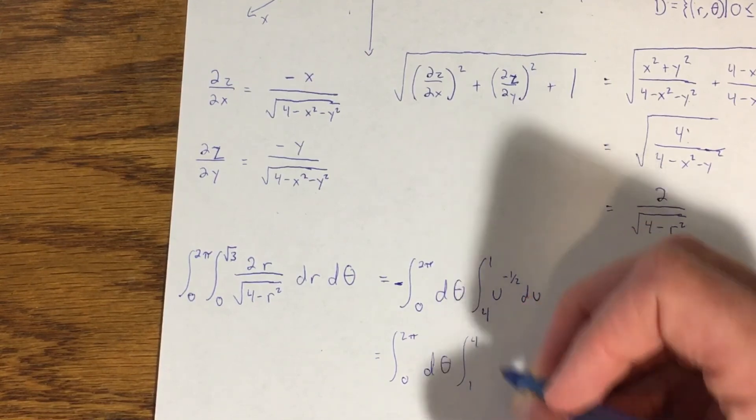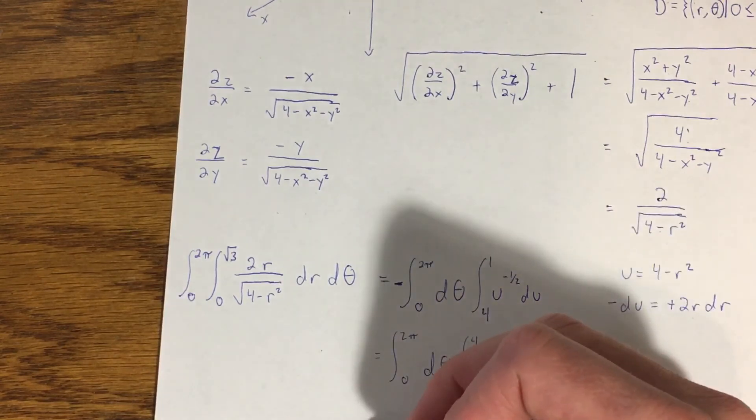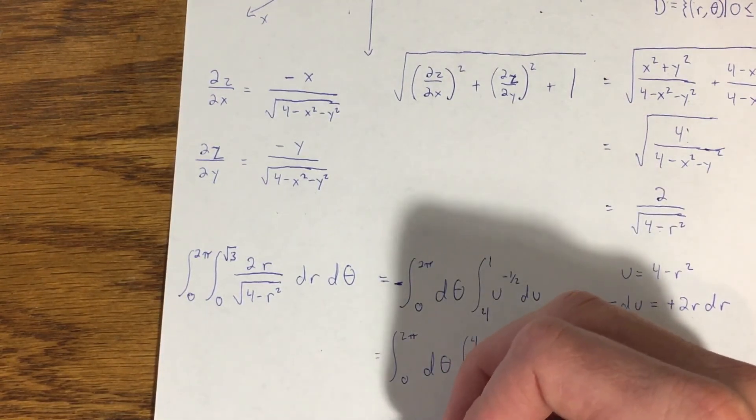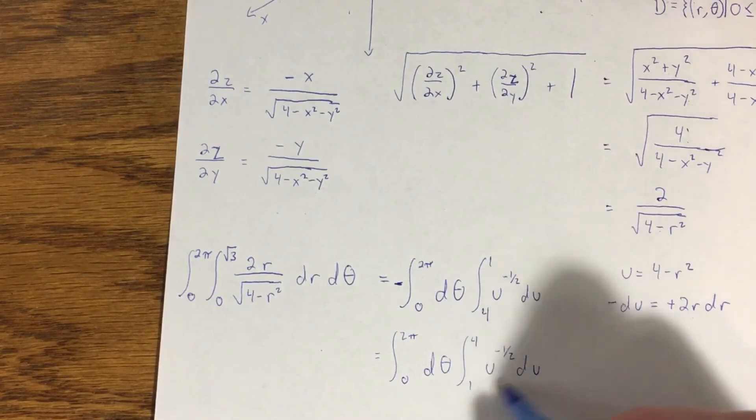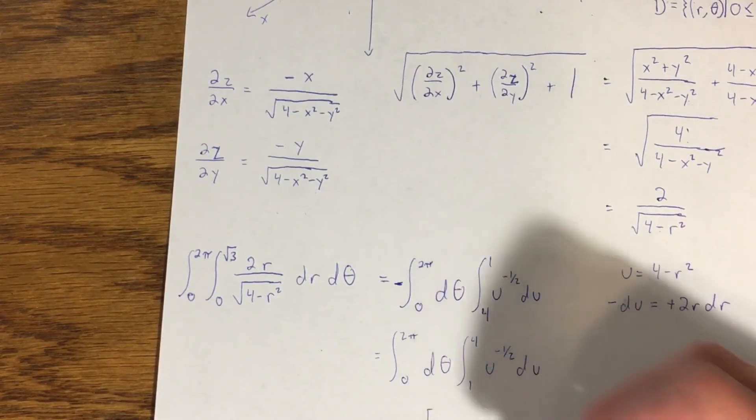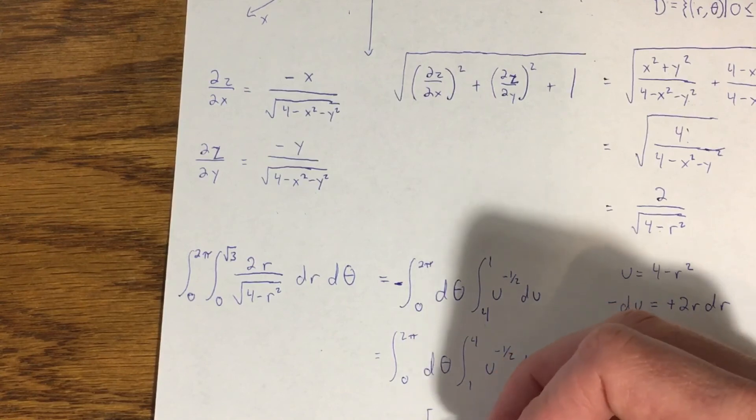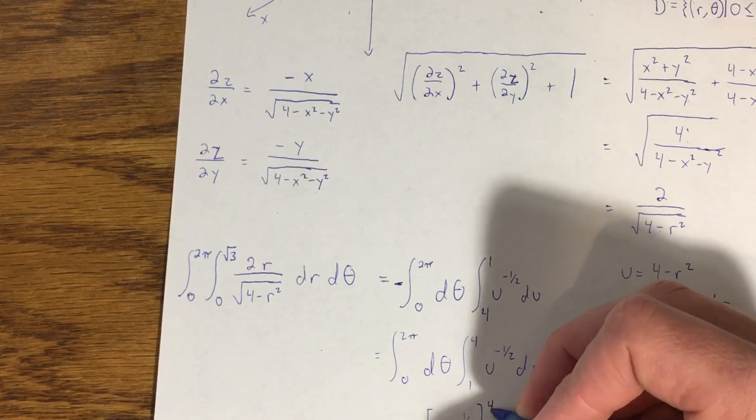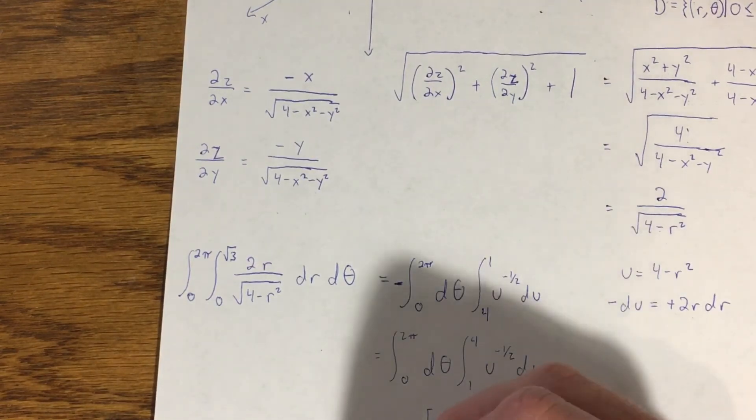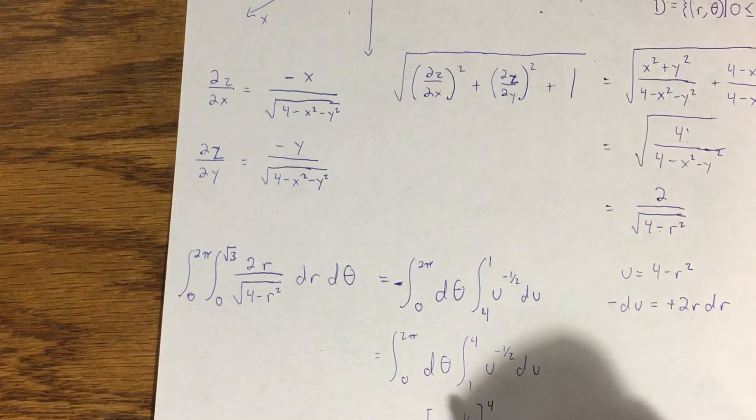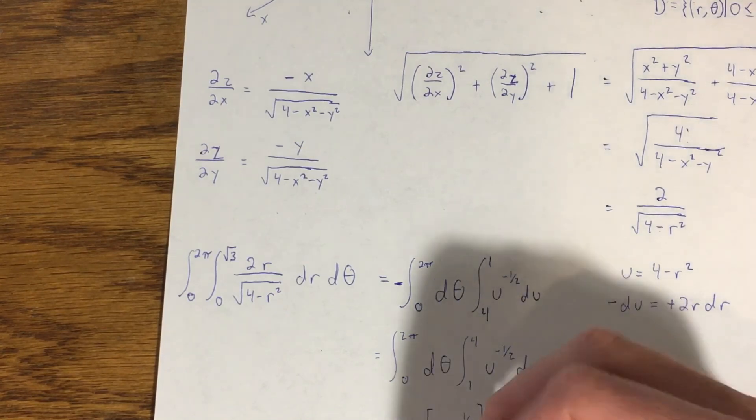This will give me 0 to 2π dθ, integral from 1 to 4 of u to the negative one-half du. From here this is pretty easy to solve. I get 2π here. This when I integrate is going to give me 2u to the one-half from 1 to 4. Bring the 2 out, that becomes 4π. What I'm left with is square root of u—square root of 4 is 2, square root of 1 is 1, so this becomes 2 minus 1, which is 1. The whole thing comes out to just 4π.